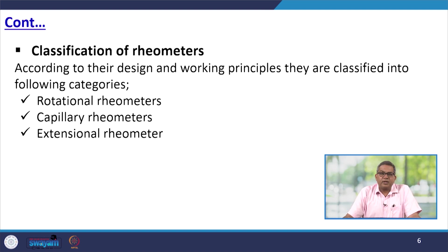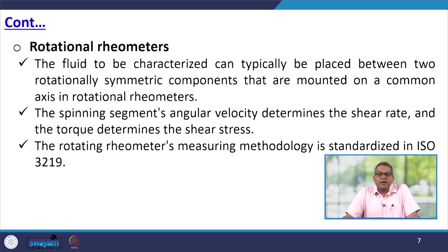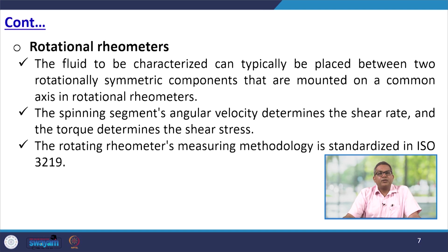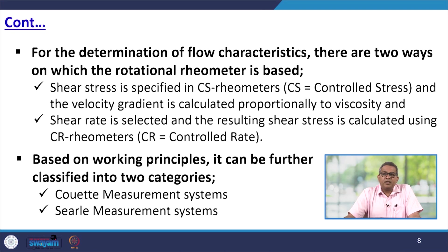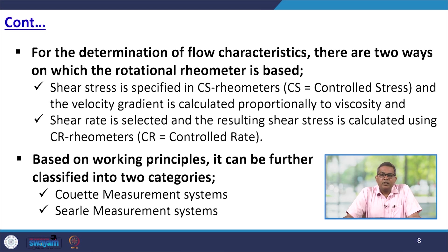As per their design and working principle, rheometers are classified into rotational rheometers, capillary rheometers, and extensional rheometers. In a rotational rheometer, the fluid to be characterized is placed between two rotationally symmetric components mounted on a common axis. The angular velocity of the spinning segment determines the shear rate and the torque determines the shear stress. The methodology is standardized by ISO 3219. There are two approaches: in a CS (controlled stress) rheometer the shear rate is specified and velocity gradient calculated; in a CR (controlled rate) rheometer the shear rate is selected and the resulting shear stress is calculated.